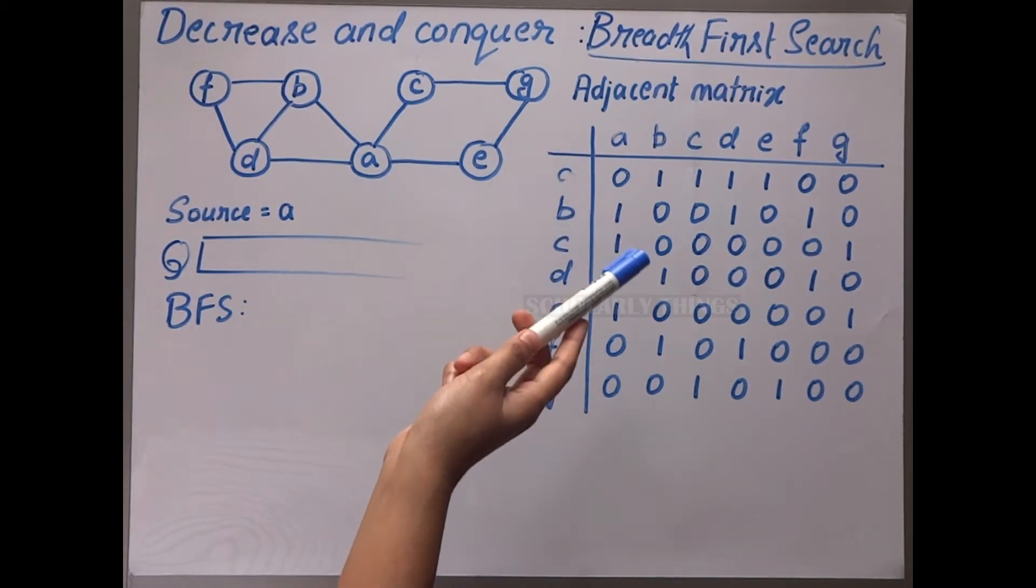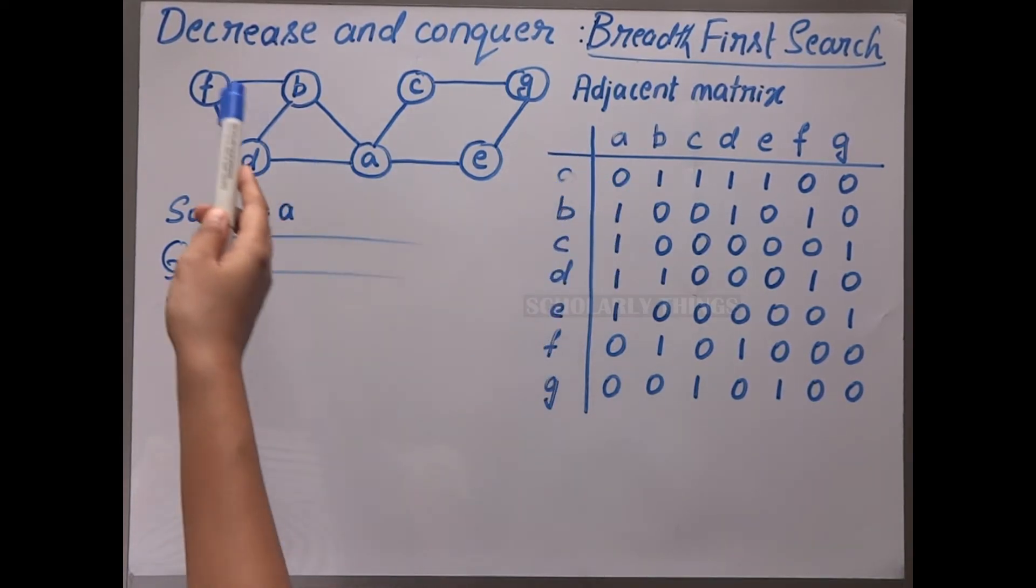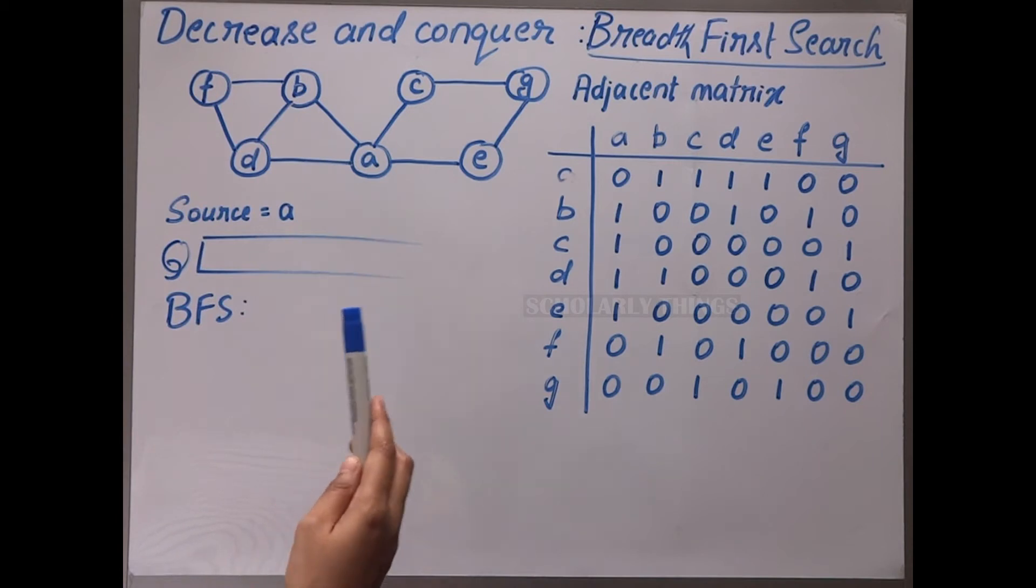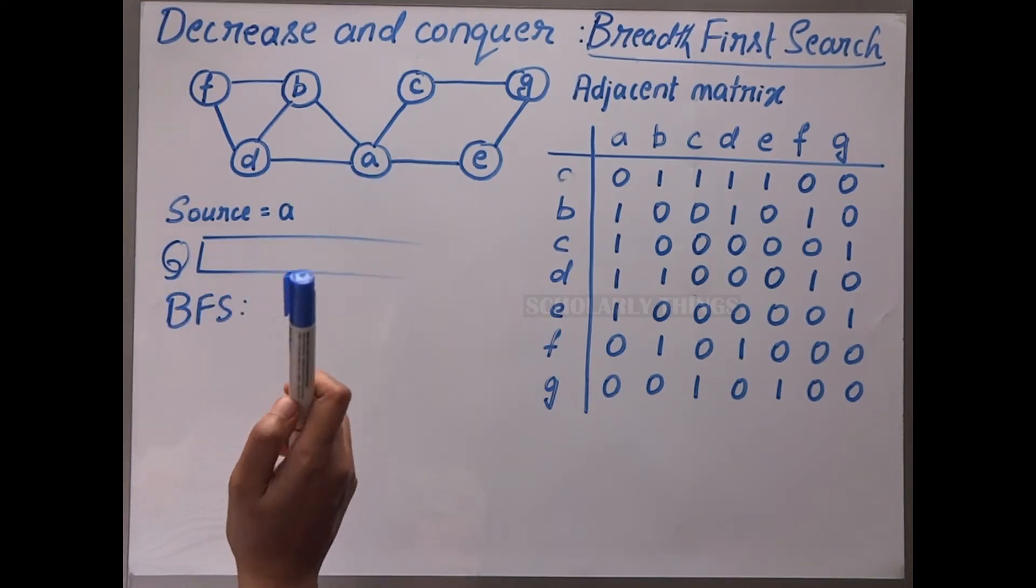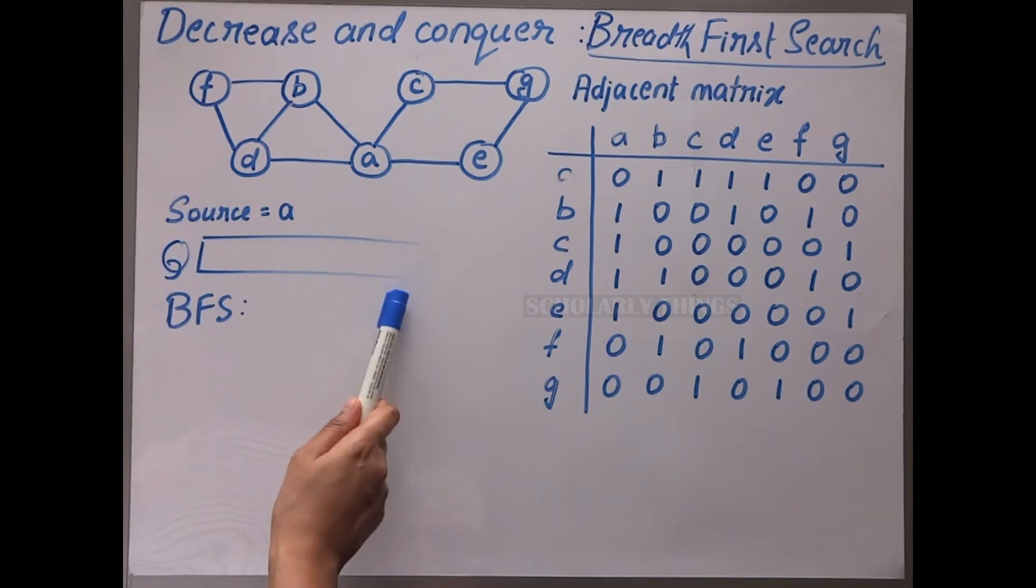Breadth-first search is another graph traversal technique under decrease and conquer. Here, take an arbitrary vertex as the source. Start exploring that node and visit all its adjacent nodes. Store the visited nodes in a queue. After visiting all the adjacent nodes of the source, pop the vertex from the queue and visit all its adjacent nodes, and so on.